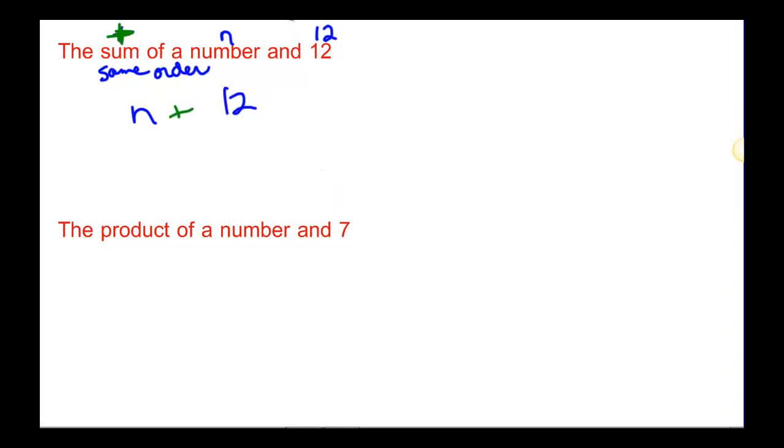Okay, next problem. Product means multiply, and it's the same order. The only one you have to worry about is when it says less than. Those are the ones you have to really watch. So it's the same order. So you're going to have the product of a number, we'll call that n, and seven. So n times seven.